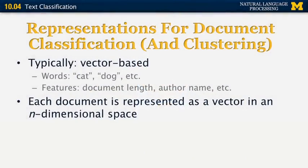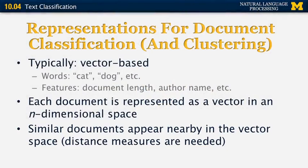For document classification and also for clustering, documents are represented the same way as for document retrieval — typically using vector-based representation where words like 'cat' and 'dog' correspond to dimensions in vector space. You can also use dimensions like document length, author name, and other metadata features. Each document is represented as a vector in an n-dimensional space, with similar documents appearing nearby, using distance measures such as cosine similarity and the Jaccard coefficient.